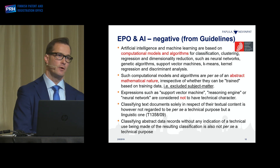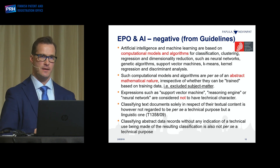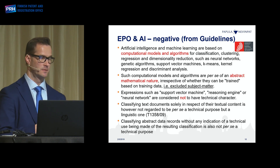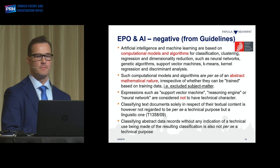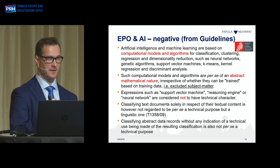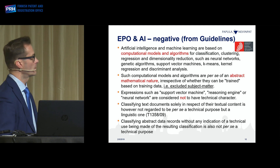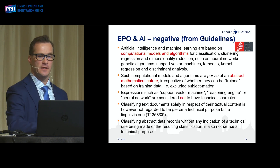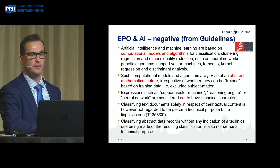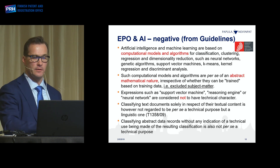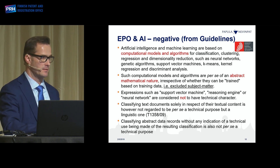As Mika also said, the EPO has now added AI examples into the guidelines, which I believe is helpful. As of November last year, they state that artificial intelligence and machine learning are based on computational models and algorithms for classification. Such computational models and algorithms are per se of an abstract mathematical nature, and thus excluded subject matter.